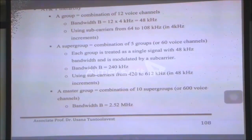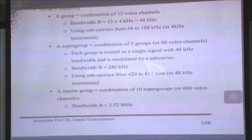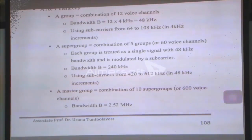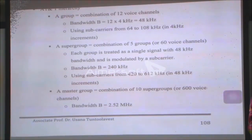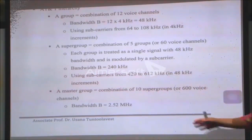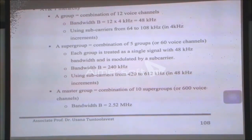One master group contains 600 voice channels formed by combining 10 supergroups. What I'm trying to say is that in practice they group in multiple levels: first group 12 channels into a group, then five groups (60 channels) into a supergroup, then ten supergroups into a master group of 600 channels — with a bandwidth of about 2.5 megahertz.